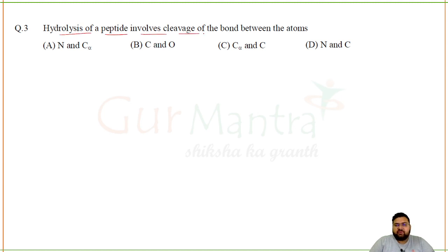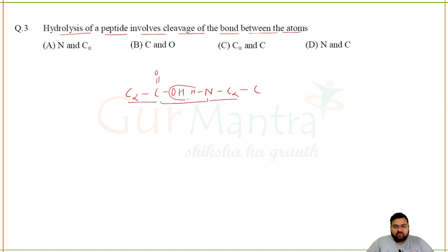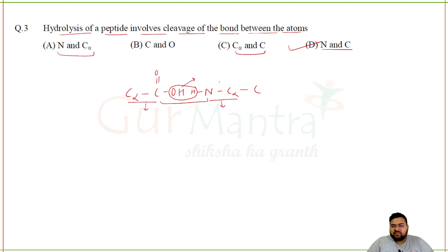Hydrolysis of a peptide involves cleavage of which bond? The peptide bond is a C-O-N-H linkage. The C-alpha is connected to the carbonyl C, and N is connected to C-alpha. The C–N bond (between the carbonyl carbon and nitrogen) is what breaks during hydrolysis — water is removed here. The correct option is B: N and C. The C-alpha–C bond (psi) and N–C-alpha bond (phi) are not broken.